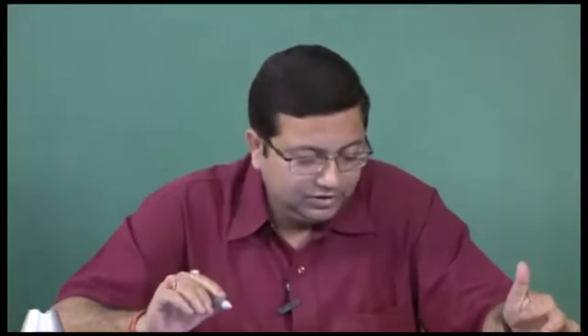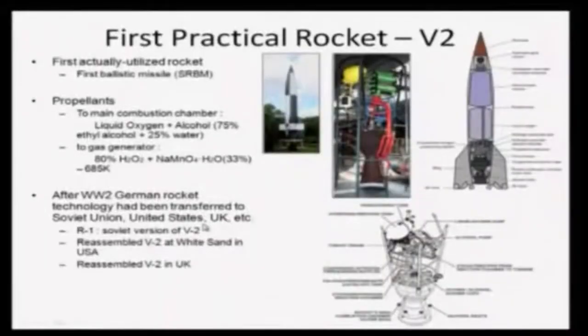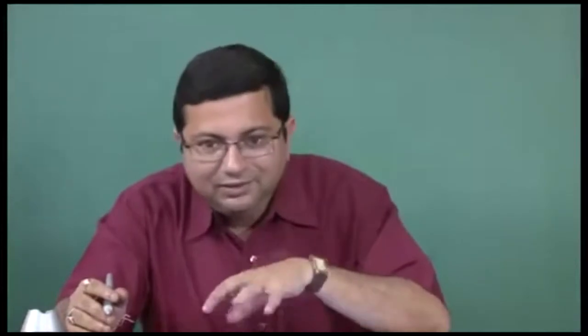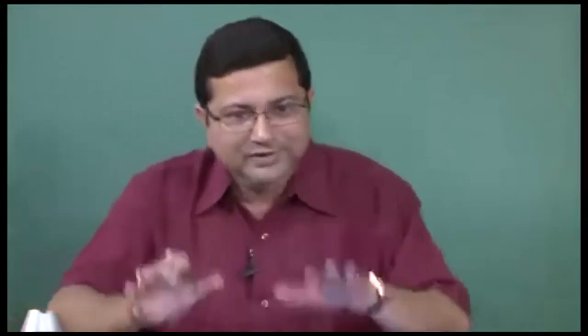After the Second World War, German rocket technology was transferred to various allied countries like the Soviet Union, United States, and UK. The R-1 was the Soviet version of the V2 rocket. The USA reassembled V2 rockets at White Sands, and the UK also reassembled V2 rockets. The technology has not much changed since then — all the main components are already present in V2. Only component efficiencies were increased, but the basic schematic remains the same.